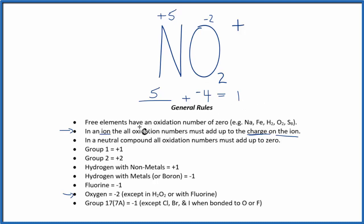So to recap, we used these rules, found the oxidation number for the elements that we knew, and that an ion will have its oxidation numbers add up to the charge here to find the element we didn't know, the nitrogen here in NO2 plus.